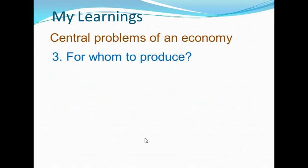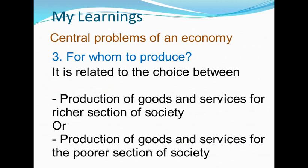The third problem is for whom to produce. This problem is related to distribution of goods and services in the economy. It is related to the choice between production of goods and services for the richer section of society or for the poorer section of society. Production of goods and services for the poor leads to maximum social welfare, whereas production for the rich leads to more profit. For example, if an economy concentrates on production of luxury goods, this will improve the standard of living of the rich class but the life of the poor will be more difficult. On the flip side, if an economy concentrates on production of necessary goods, this will serve the society but profits will reduce.